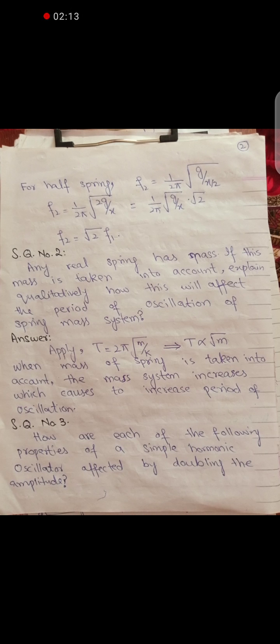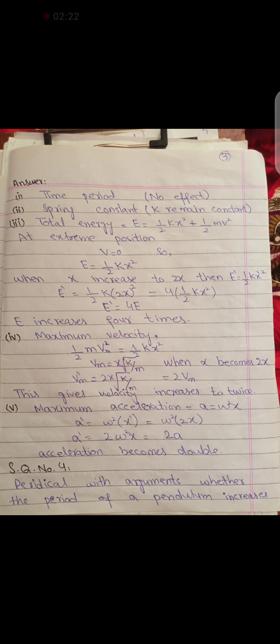Question number 3: How is each of the following properties of a simple harmonic oscillator affected by doubling the amplitude? Time period remains constant because the spring constant remains constant. For energy, at extreme position velocity is zero, so kinetic energy is zero and total energy equals potential energy. When you replace X with 2X, energy becomes four times, so energy increases four times.